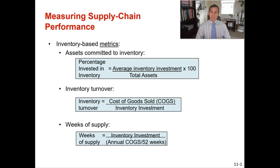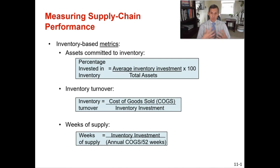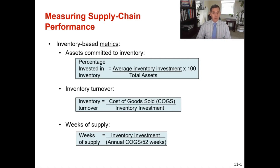With weeks of supply, in general you want a lower number as well, because if you've got half a year's worth of inventory on hand it means you've used company cash to buy inventory and you probably don't want that much. In normal business settings you want a lower amount of weeks of supply on hand — you want to turn that inventory over more often. So those are the three metrics we're going to look at when measuring supply chain performance.